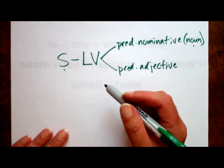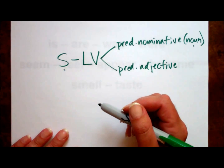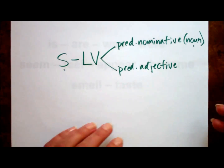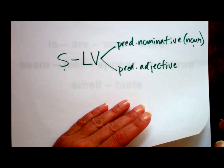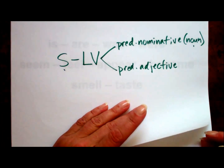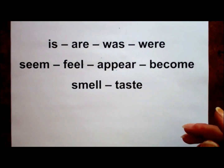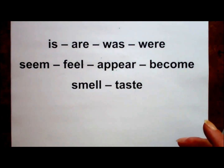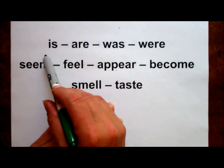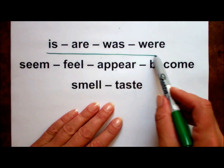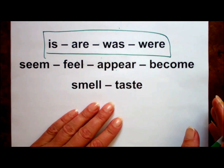Before we look at an example, let's recall that list of the most common linking verbs: is, are, was, were, seem, feel, appear, become, smell, taste. These four up here are the most common ones in the language.